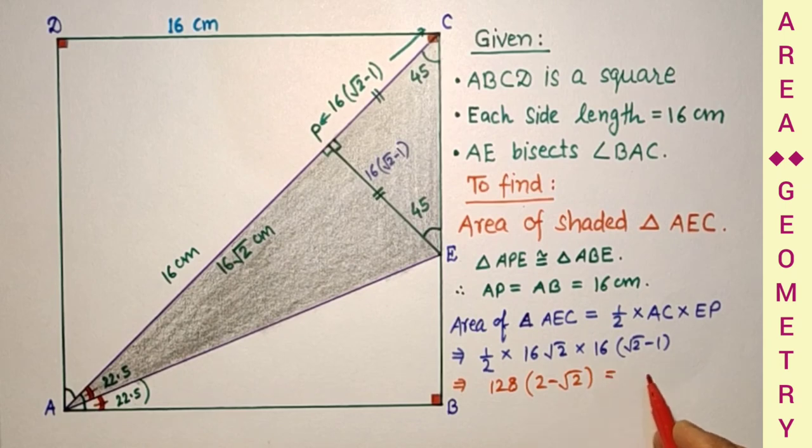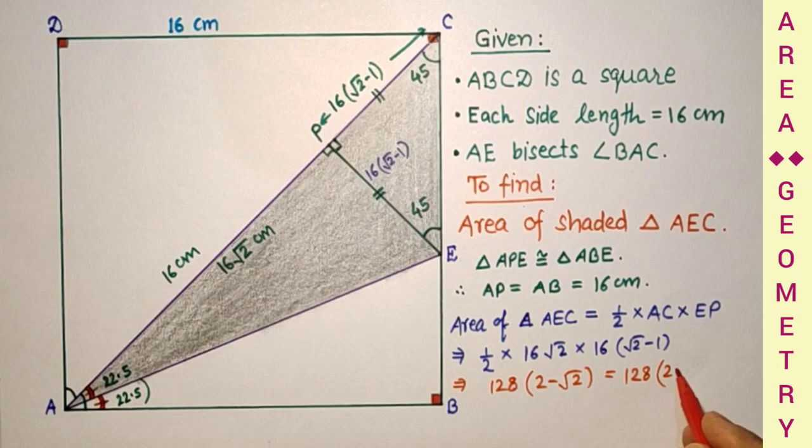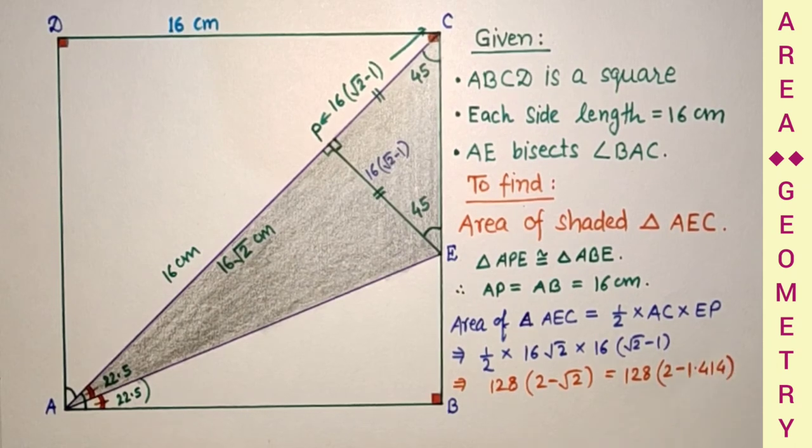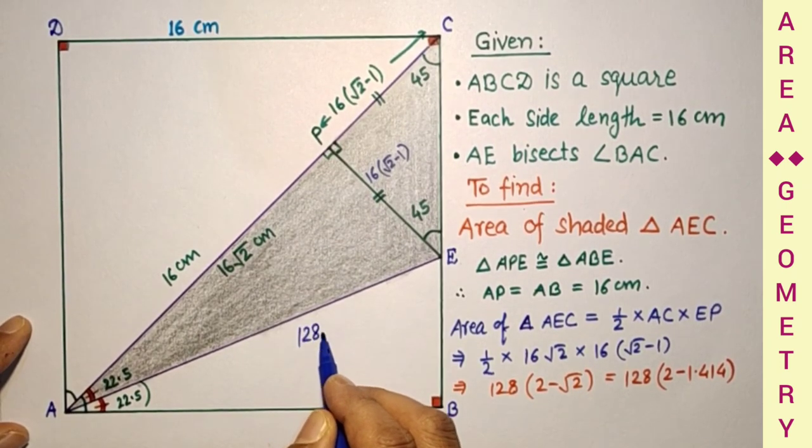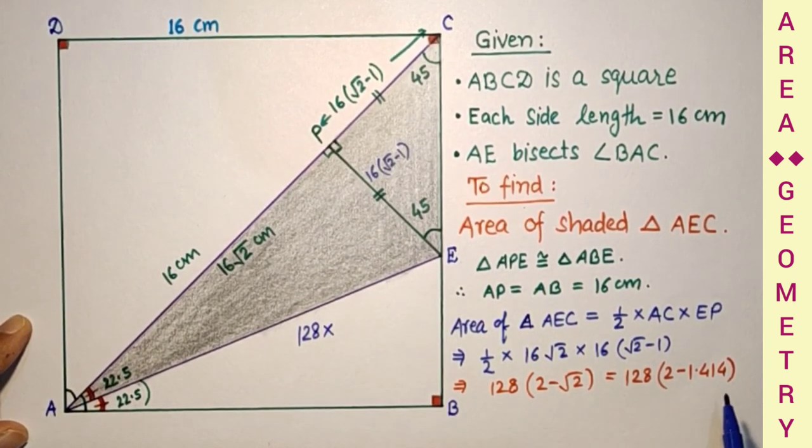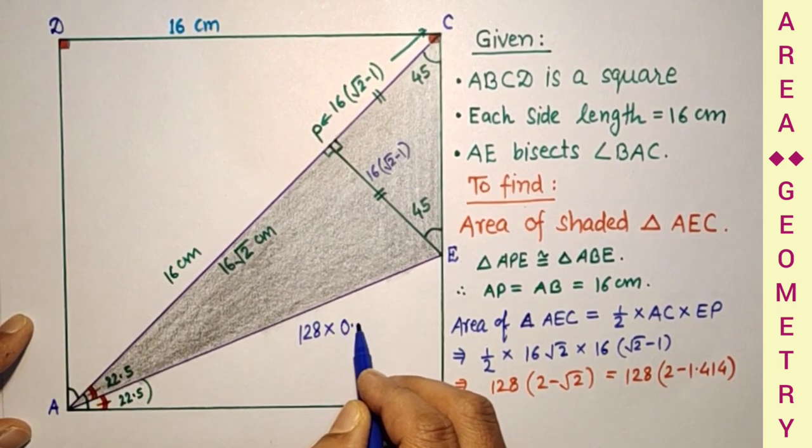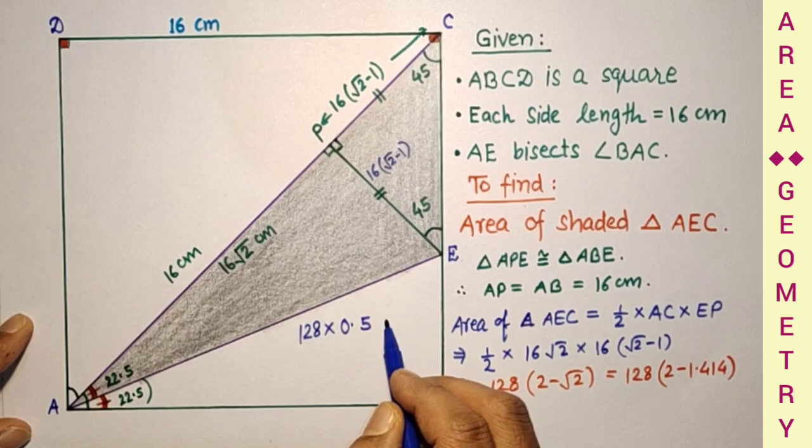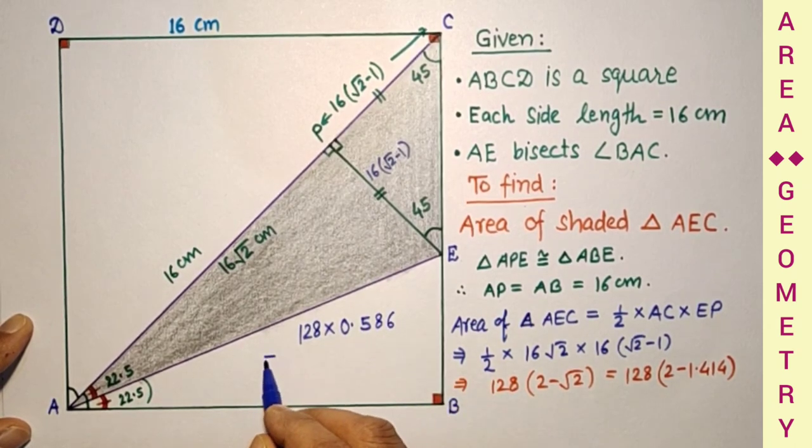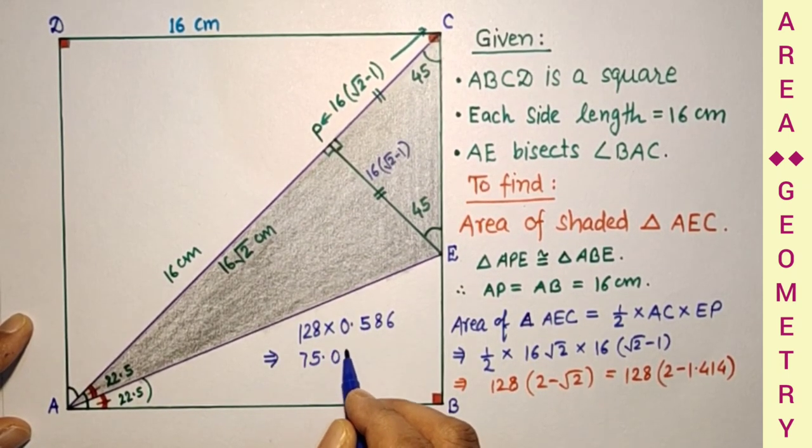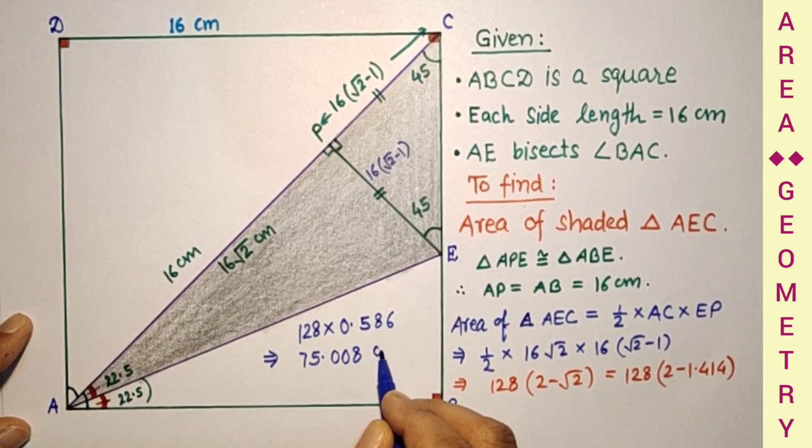Which equals 128, 2 minus 1.414. It will be 128 into 2 minus 1.414. That equals 0.586. And if we multiply we will get 75.008 cm square.